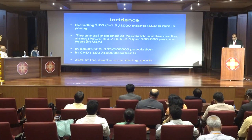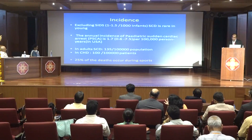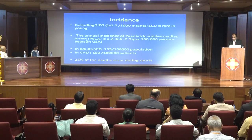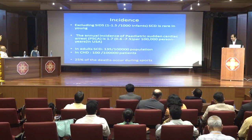In congenital heart disease, sudden cardiac death is quite common — 100 per lakh patients. Additionally, 25% of deaths occur during sports in athletes.